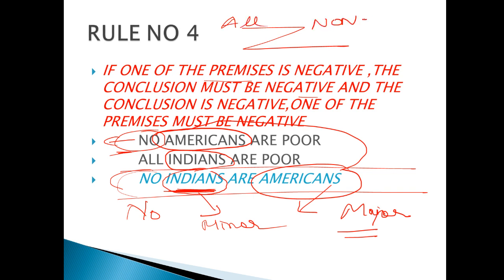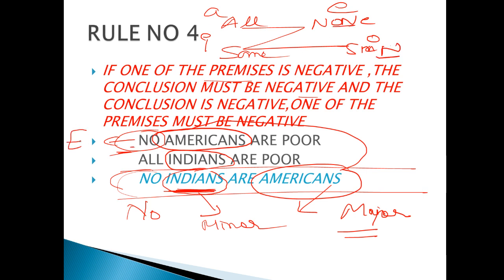यहाँ से: All, None, Some, Some not — यहाँ पर A, E, I, O। Some not के साथ 'no' — हमारा None वाला होगा, तो यह हो गया E। All वाला होगा A। और No वाला E। तो E, A, E — हमें पता लग गया।